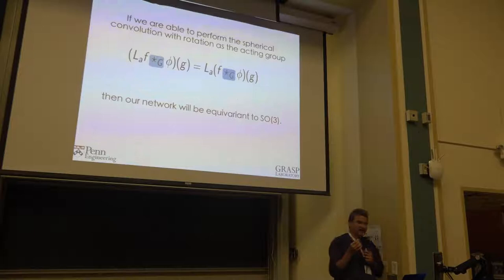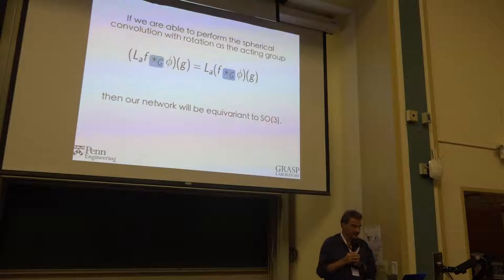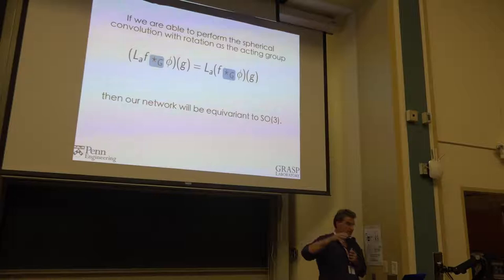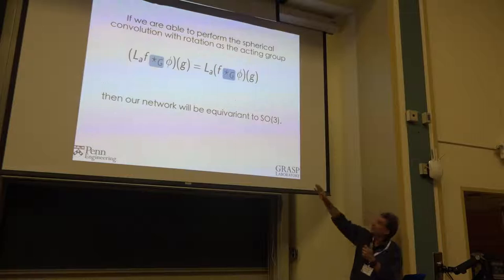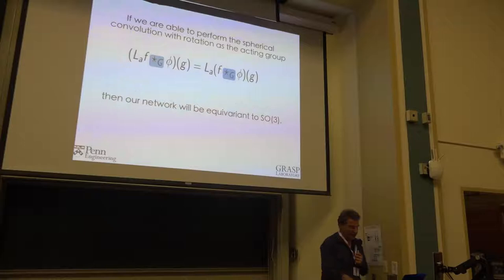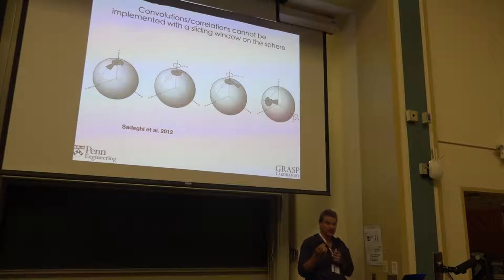Now, if we are able to find the convolution, which is for the corresponding group, the way we calculate in translation, and we denote this convolution with this star G, then we know by the definition of the convolution that this will be equivalent. So if we apply an action A in the input, this will be applied on the whole feature maps. Now, there is a small problem with when you try to implement this, that you cannot take just a theta phi sphere and fold it and just run a mask there.